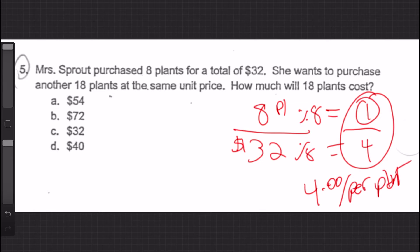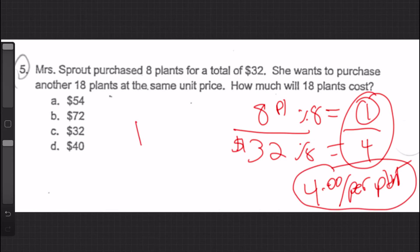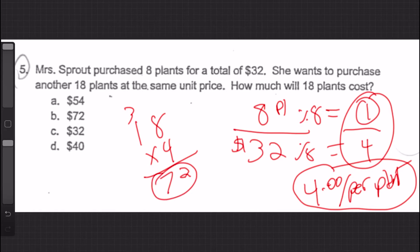She wants to purchase another 18 plants at the same unit price. We're not figuring out what she's already paid — just the cost of the next 18. Now that we know it's $4 per plant, we multiply 18 times four. Eight times four is 32, carry the three; four times one is four, plus three is seven — $72. 18 times four equals $72, so the answer is B.